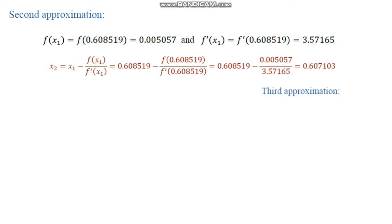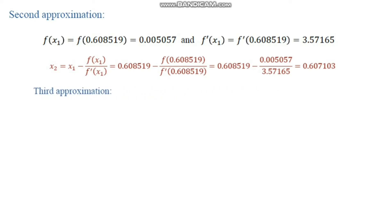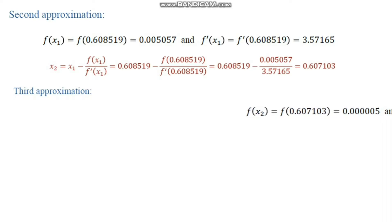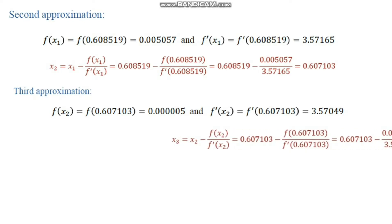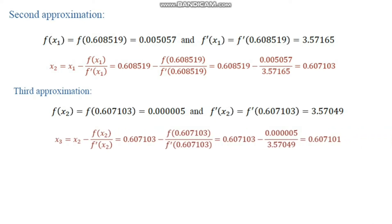For the third approximation, we consider f(x₂) and f'(x₂), apply the Newton-Raphson formula, and after simple calculation obtain x₃ = 0.607101.